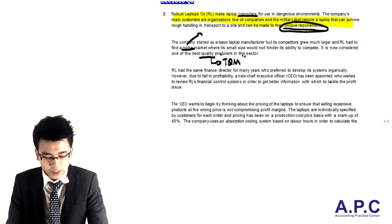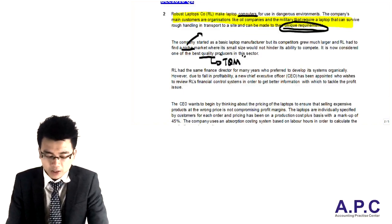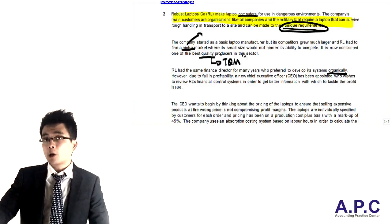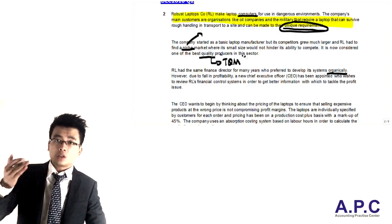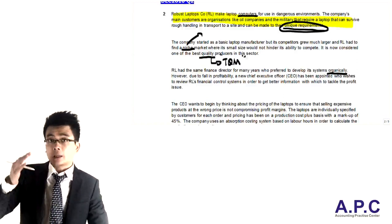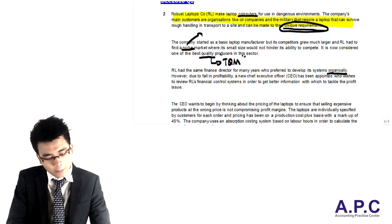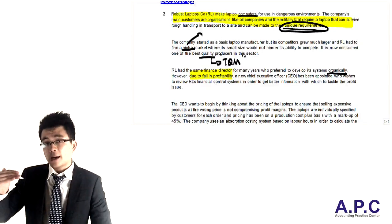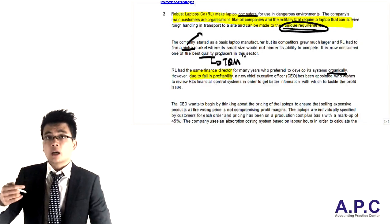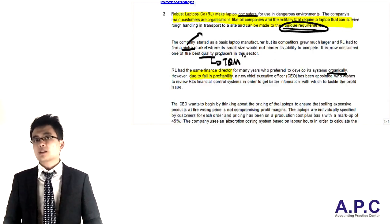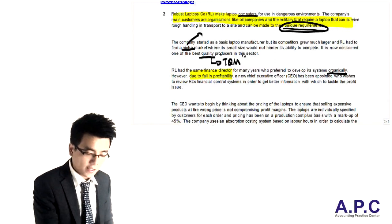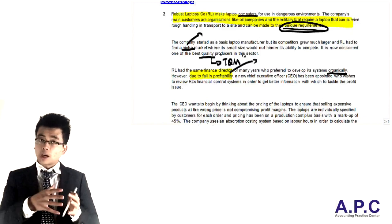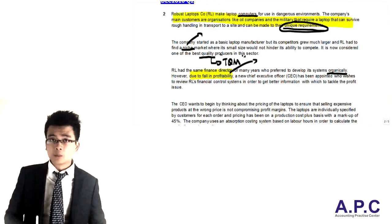The company had the same finance director for many years but preferred to develop the systems organically — meaning to manufacture it, build it, sell it, rather than consolidate another company. Organic means to grow your business on your own. But due to the fall in profitability, the company's performance is actually impaired, and as a result, the company has to change and restructure its businesses. This is the internal environment changing, so implementing Beyond Budgeting might be more suitable.